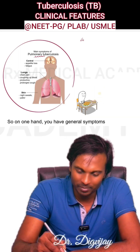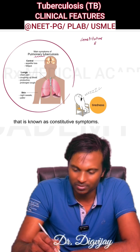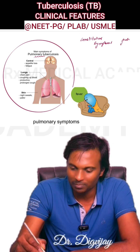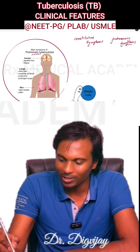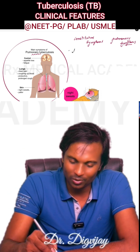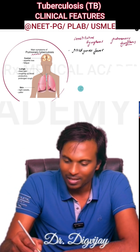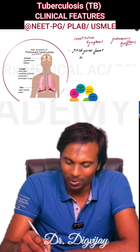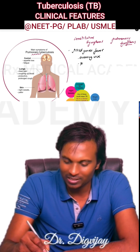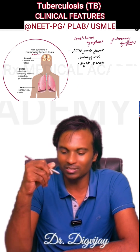So on one hand, you have general symptoms, known as constitutional symptoms. And on the other hand, you might have pulmonary symptoms. This TB bacteria is slow growing, which will only cause mild grade fever in general. You might have also studied about this evening rise, along with night sweats, which are very pathognomic of this TB disease.